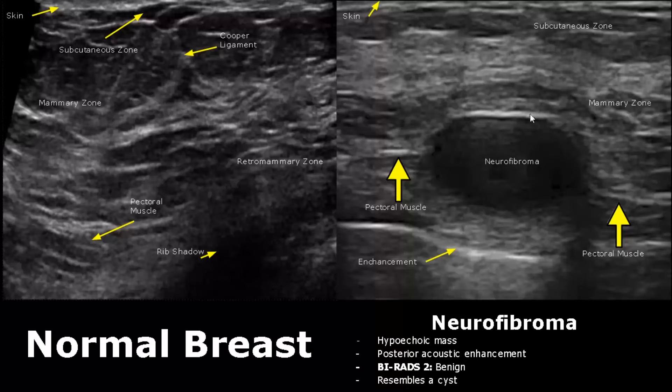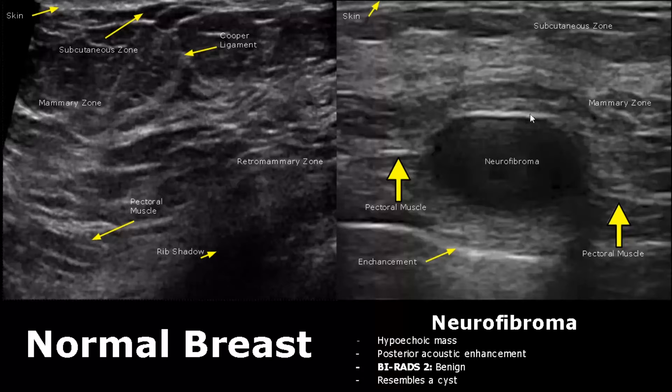A neurofibroma is a rare benign tumor which appears as a hypoechoic mass with posterior enhancement. It is very tricky because it resembles a cyst, so it can be misdiagnosed very easily.